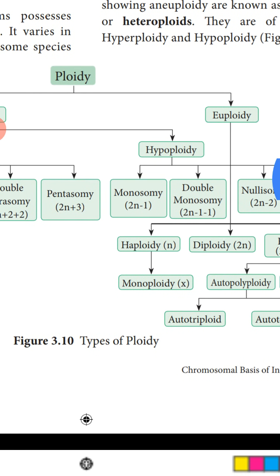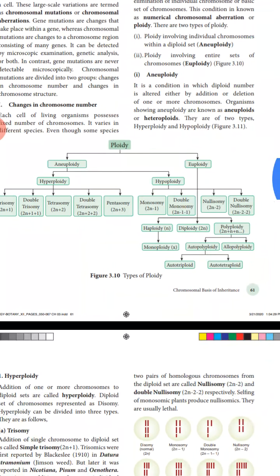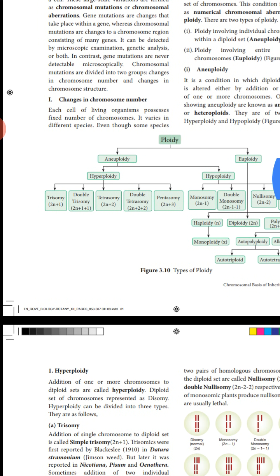In the types of ploidy flowchart, ploidy is of two types: aneuploidy and euploidy. Aneuploidy is the addition or deletion of one or two chromosomes, bringing about a change in the diploid number. Euploidy is where basic sets of chromosomes are added or removed. Under aneuploidy there are two types: hyperploidy and hypoploidy.